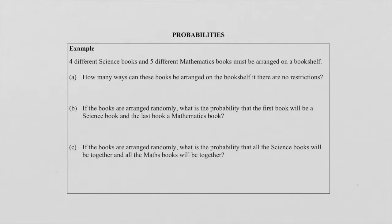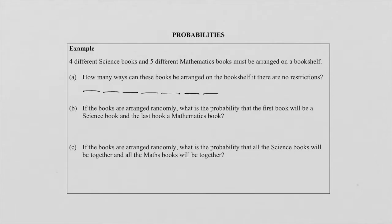They say we need to arrange these books on a bookshelf. They ask how many ways can these books be arranged on the bookshelf if there are no restrictions. They don't want any grouping or any specific book in any position — any way we can arrange them, no restriction, we arrange them on a bookshelf.